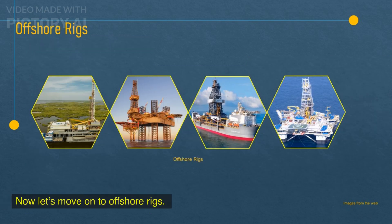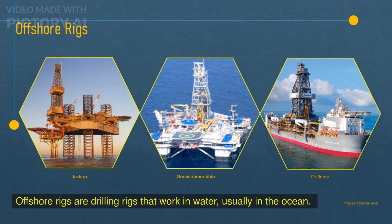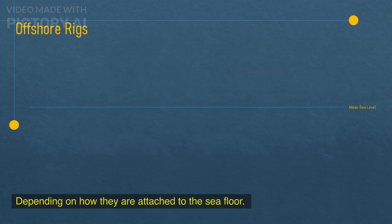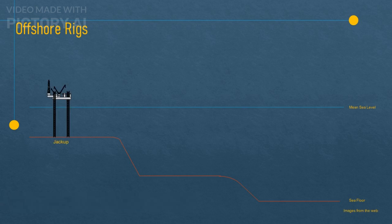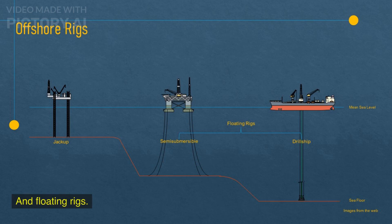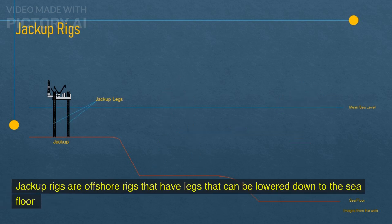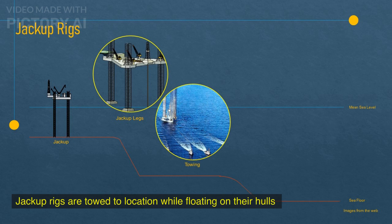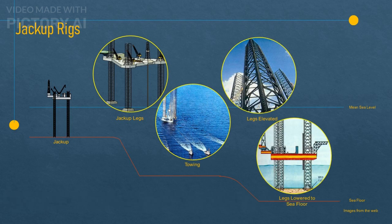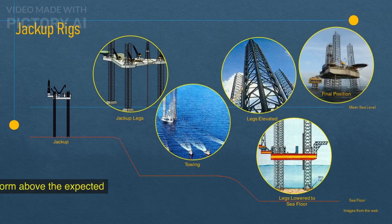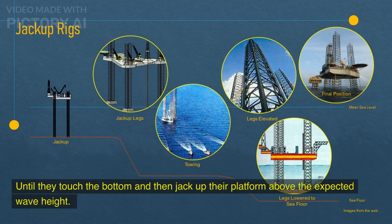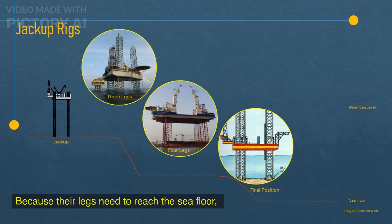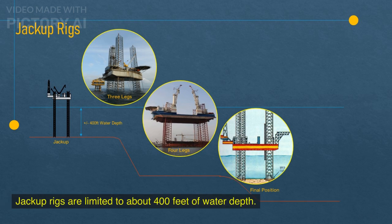Now let's move on to offshore rigs. Offshore rigs are drilling rigs that work in water, usually in the ocean. They can be fixed or floating, depending on how they are attached to the seafloor. The main categories of offshore rigs are jack-up rigs and floating rigs. Jack-up rigs are offshore rigs that have legs that can be lowered down to the seafloor and lift the platform above the water level. They are towed to location while floating on their hulls with their legs elevated out of the water. Once they reach the desired spot, they lower their legs until they touch the bottom and then jack up their platform above the expected wave height. Jack-up rigs can have three or four legs depending on their design, and are limited to about 400 feet of water depth.